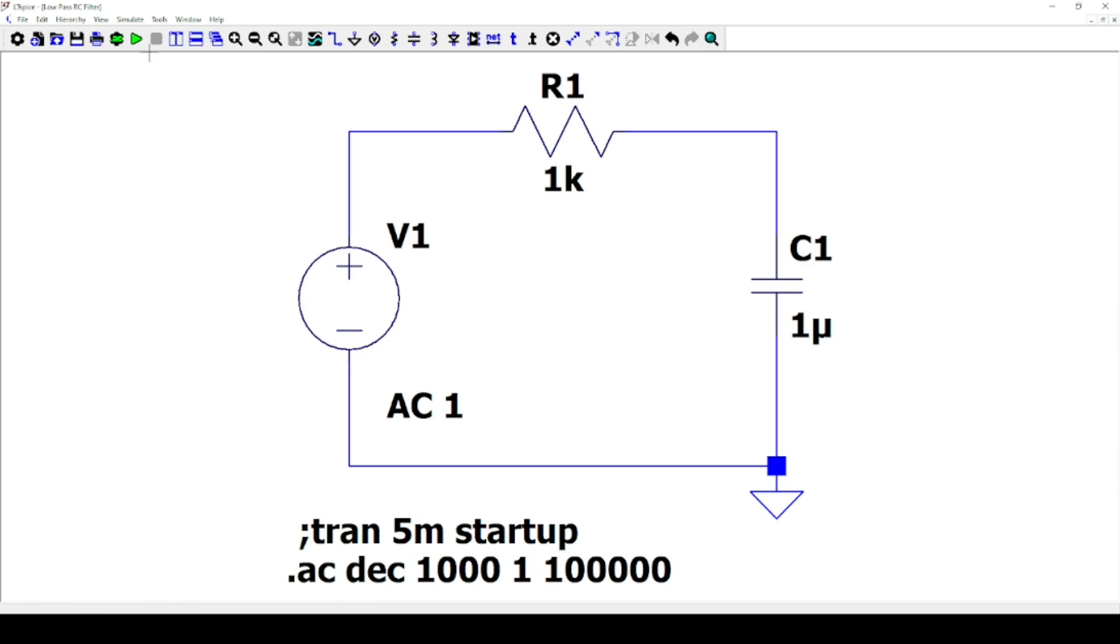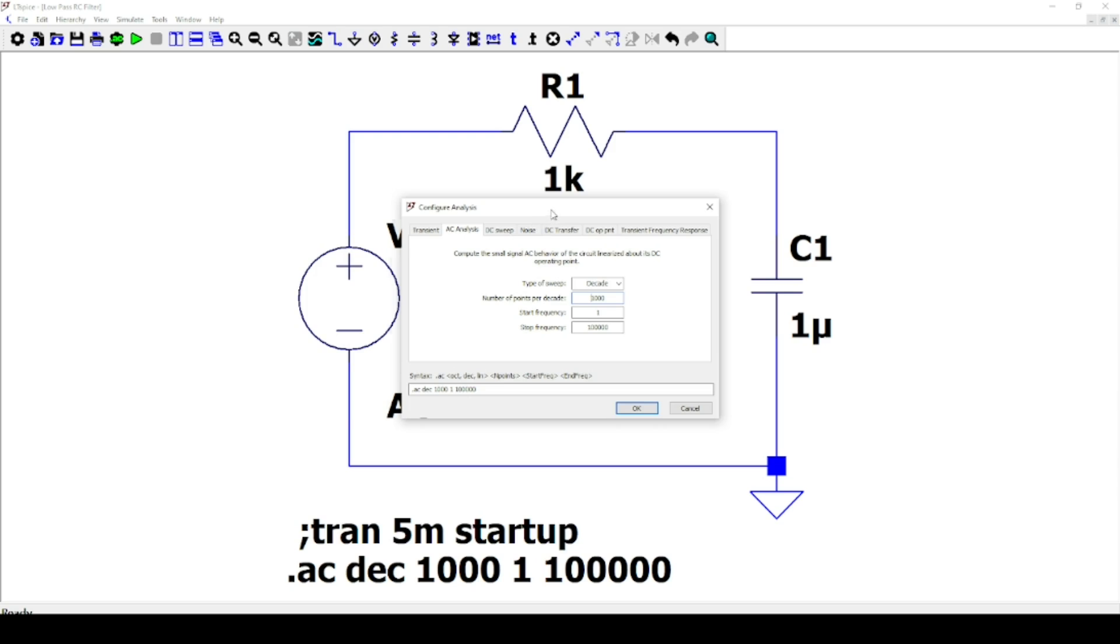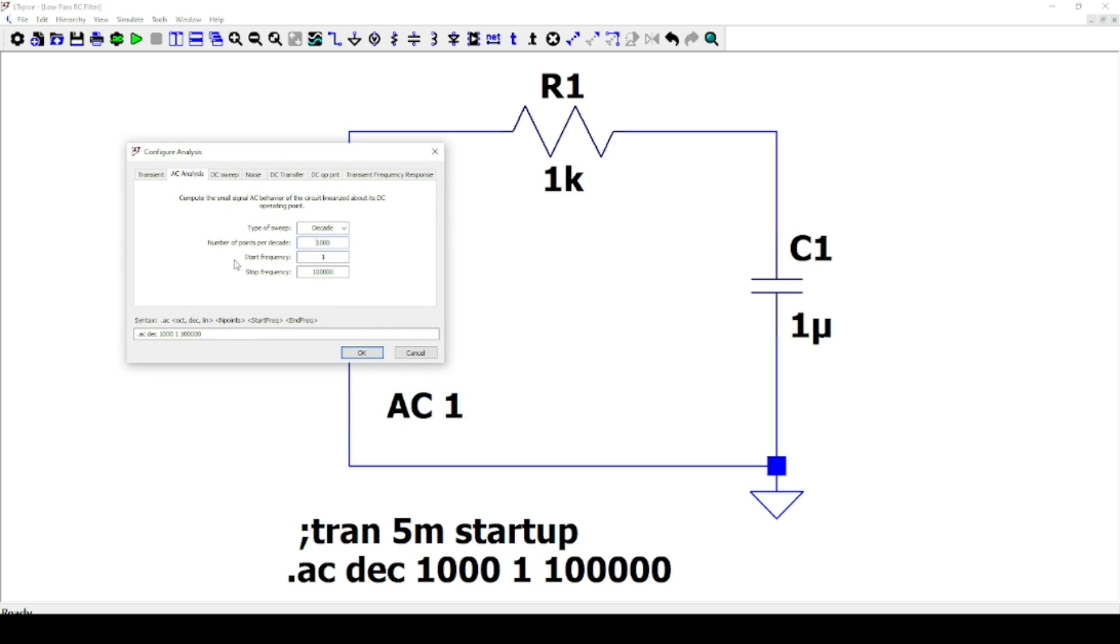In this simulation, we want to check the frequency response of the filter. You will need to go to Simulate, then press Configure Analysis and select AC Analysis. Select Decade, and let's consider 1000 points per decade.